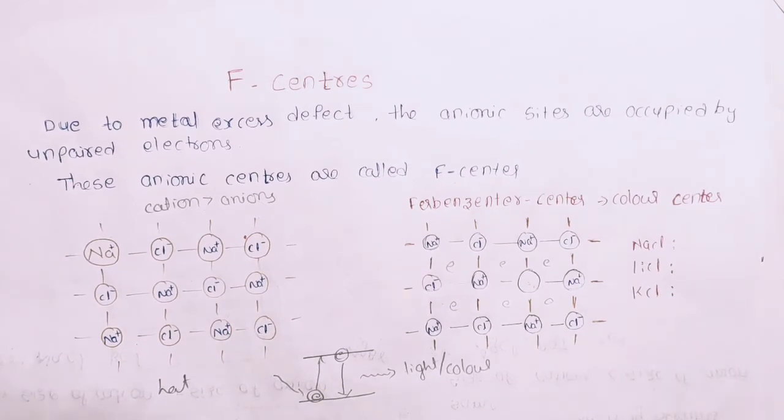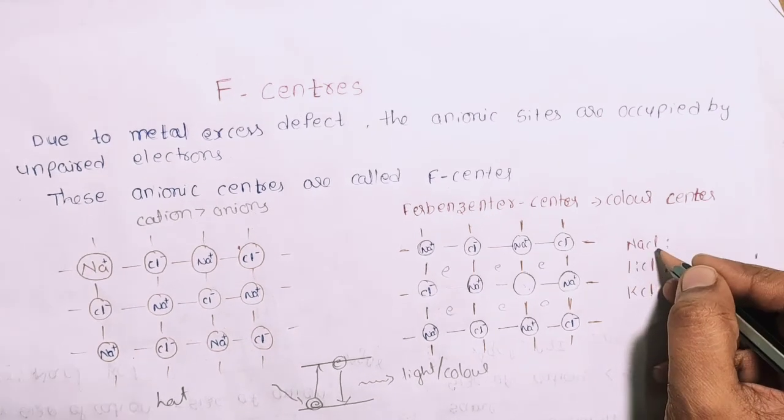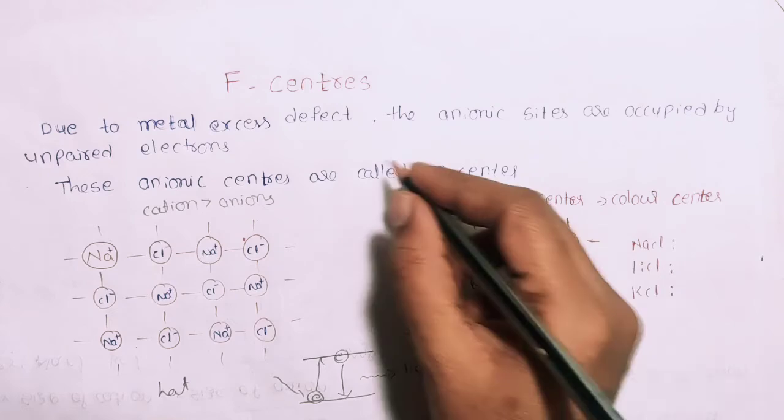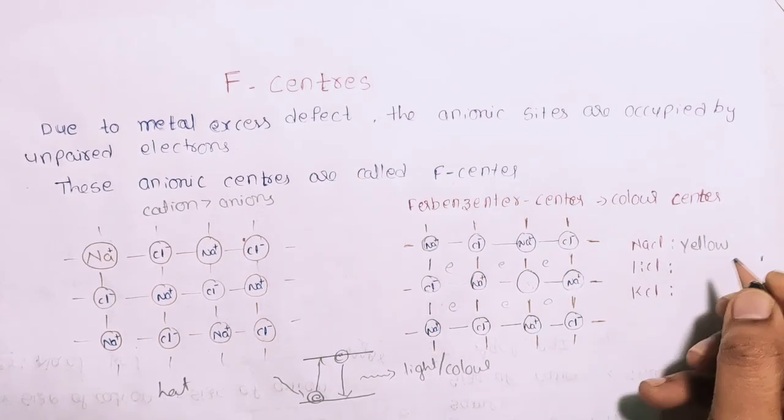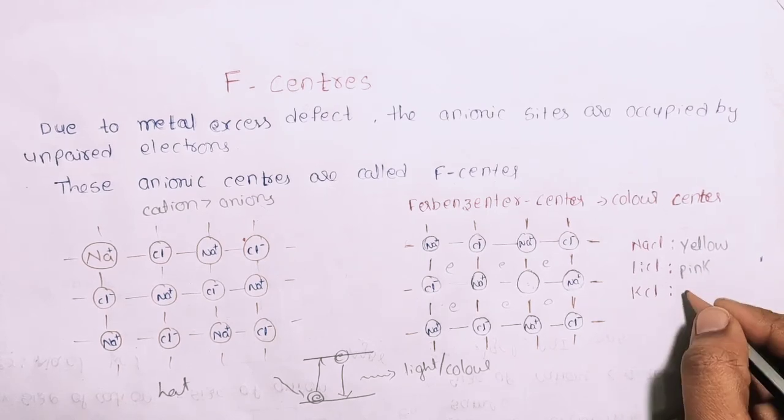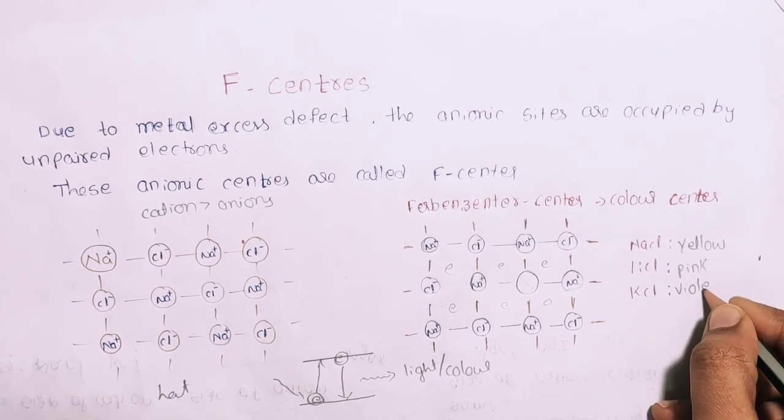This is a simple explanation of F-center color center. Normally, NaCl is white, but because of this F-center, it shows yellow color. LiCl is pink color, and KCl shows violet color.